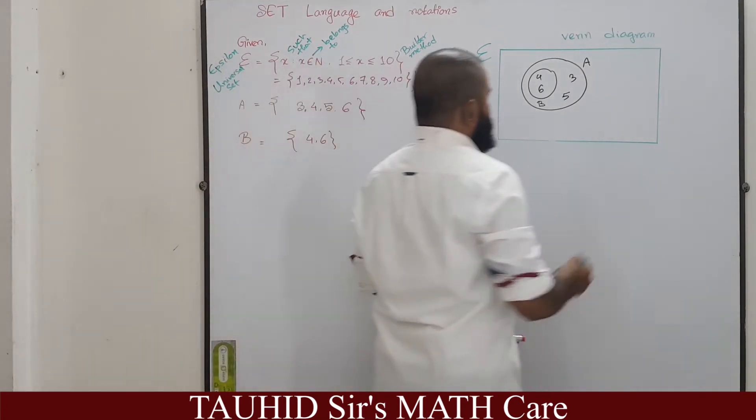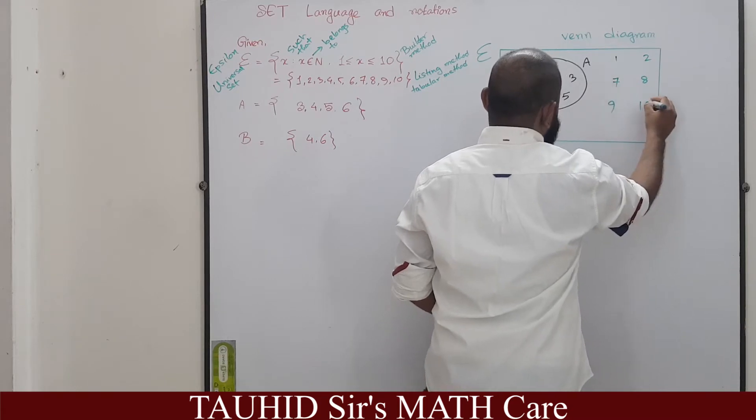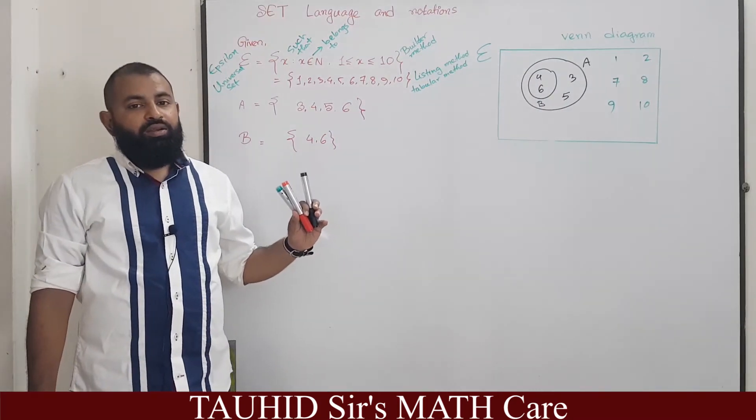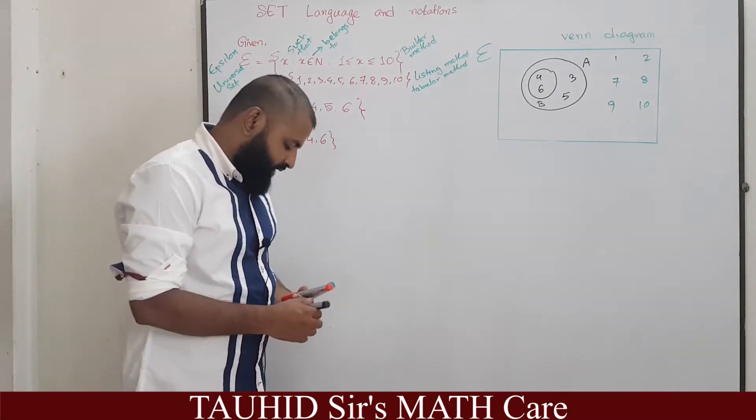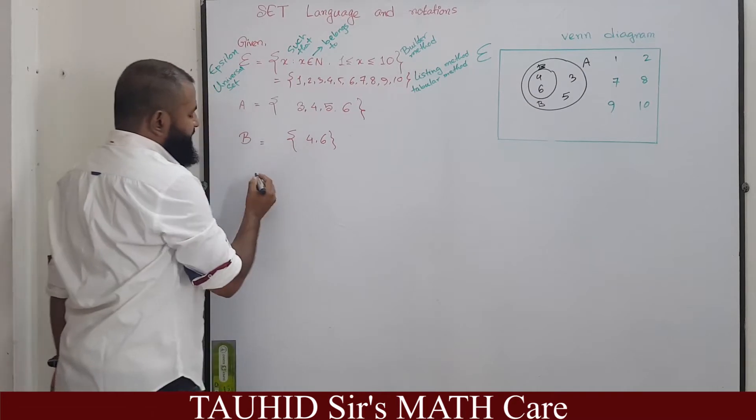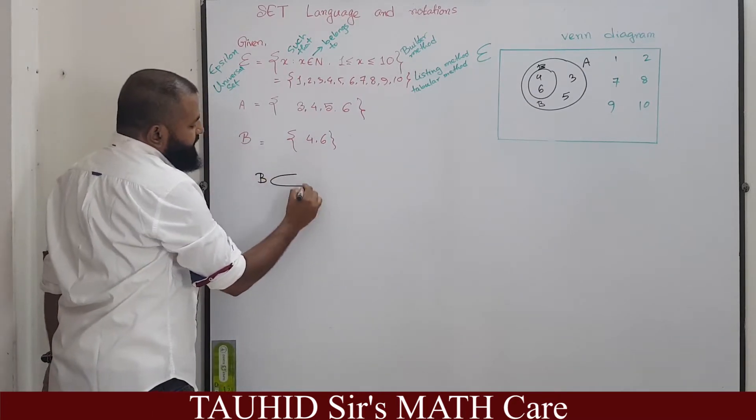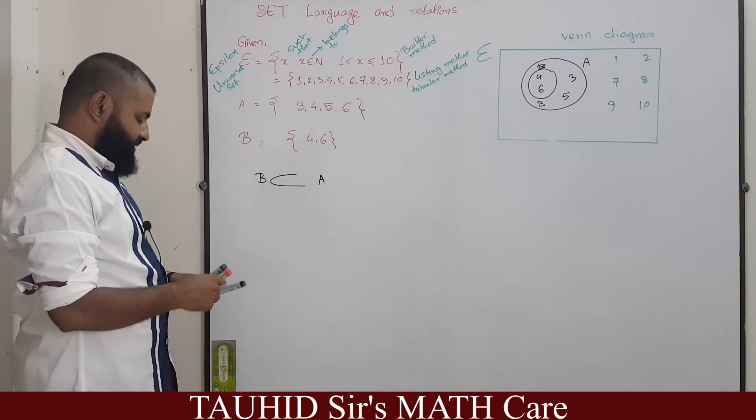That means we can say 1, 2, 7, 8, 9, 10. So we will start with these informations and explain more. Here the set B lies within A, this type of case is called a subset. We pronounce it as B.